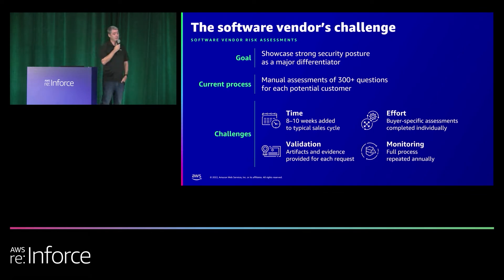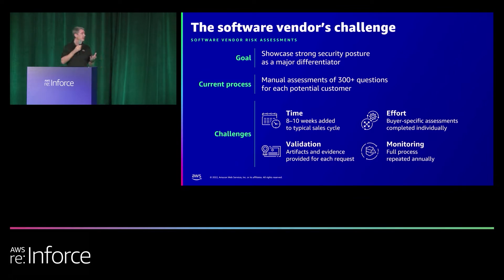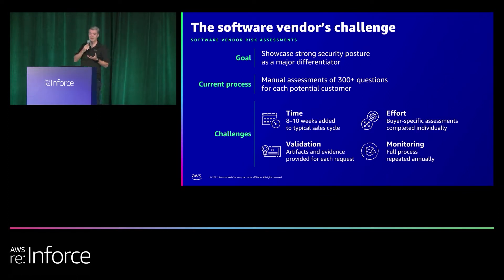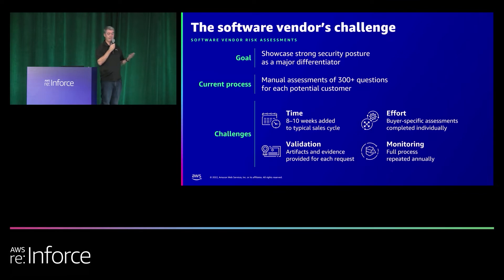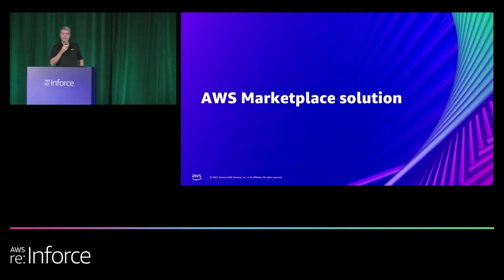On the seller side, it's not much better. ISVs have invested a lot in their security posture — partners like Trend Micro and Security Scorecard have a strong security story and want to represent that to customers as quickly as possible. But they also have teams of humans spending their entire day answering questions. Sellers invest in audits like SOC 2 or ISO 27001, which are expensive and slow — the average cost of a SOC 2 audit is $60,000, and customers want a current one, not one from five years ago. AWS Vendor Insights is going to help address that.